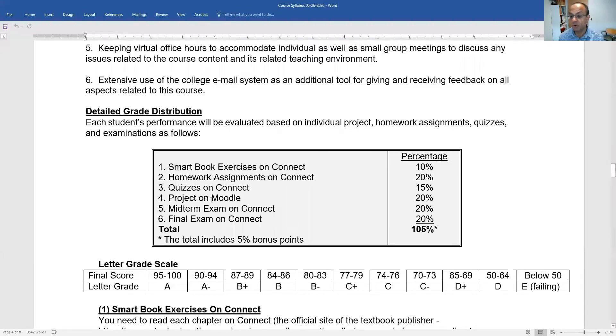If you add up the coursework from each one of those six elements, you will see that the total is 105. But we know the course total should be 100. So from the beginning, I give you 5% bonus in case you missed anything, there is still a chance that you can go for a high grade at the end.